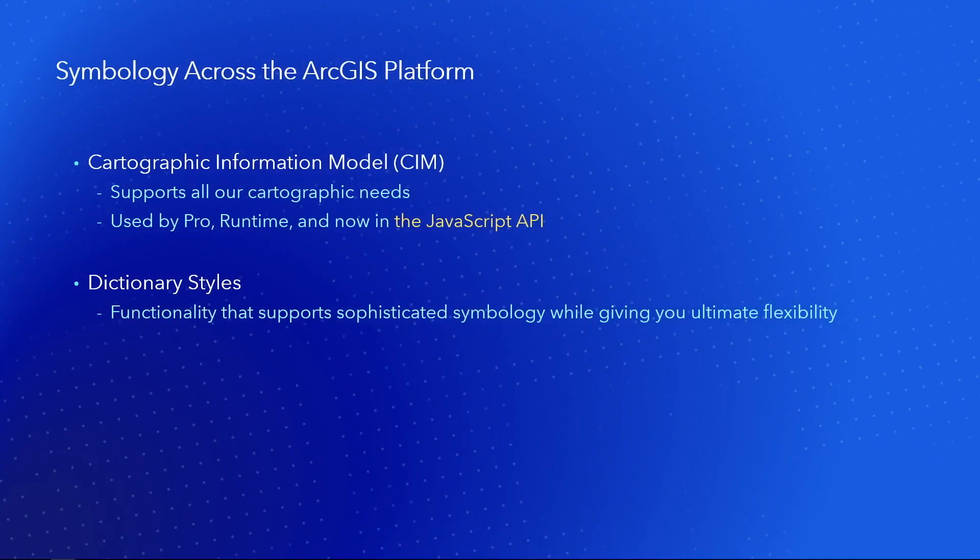For that, we have the Cartographic Information Model. The Cartographic Information Model, otherwise called SYM, is used by Pro and by Runtime, and has been for a number of years. But just recently, we've added SYM support directly into the JavaScript API, so that your symbology will look the same no matter which developer technology you use to build your solution.